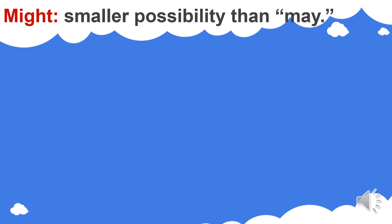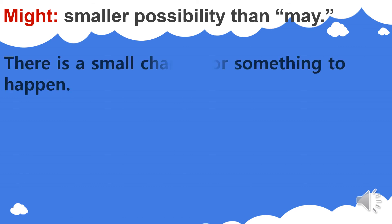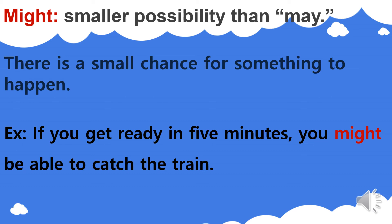We also use might for possibility, but for a smaller possibility than may — a smaller chance. So may and might both express possibility. What's the difference? When there is a small chance for something to happen, we use might. For example: 'If you get ready in five minutes, you might be able to catch the train.' Is this person going to catch the train? Most likely they will not be able to. We have a very small chance, which is why we used might and not may — because getting ready in five minutes doesn't seem very easy.